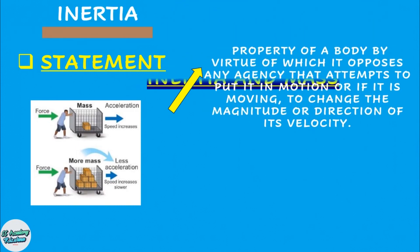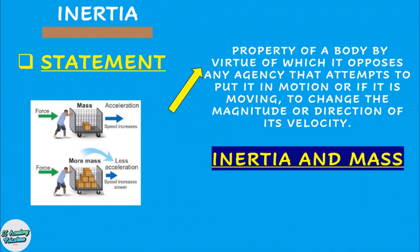Now here I will emphasize another property, inertia, how it is related with mass. So inertia is actually property of a body by virtue of which it opposes any agency that attempts to put it in motion or if it is moving to change the magnitude or direction of its velocity. So lighter masses have less inertia and more massive bodies have more inertia. This is the reason that lighter masses are accelerated more and heavier bodies are accelerated less if we use the same applied force as shown in this diagram.